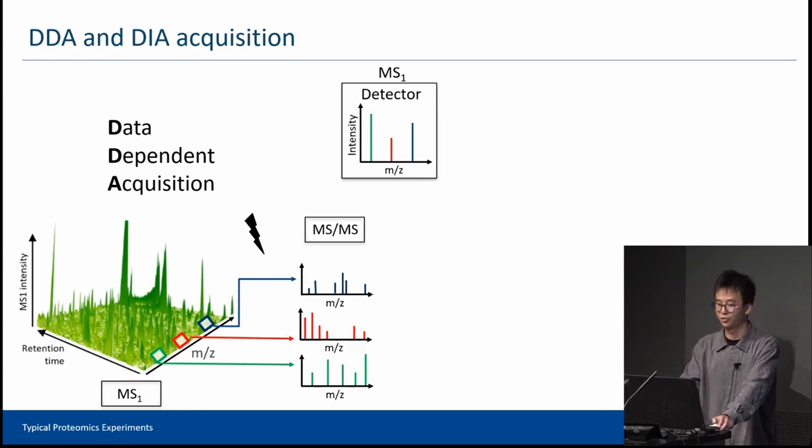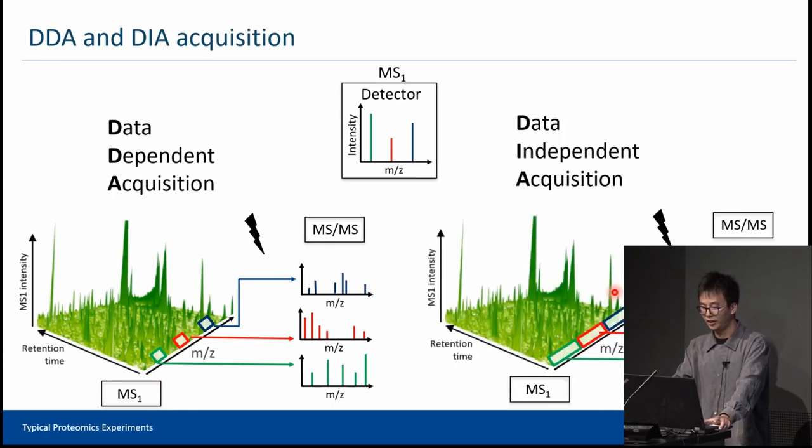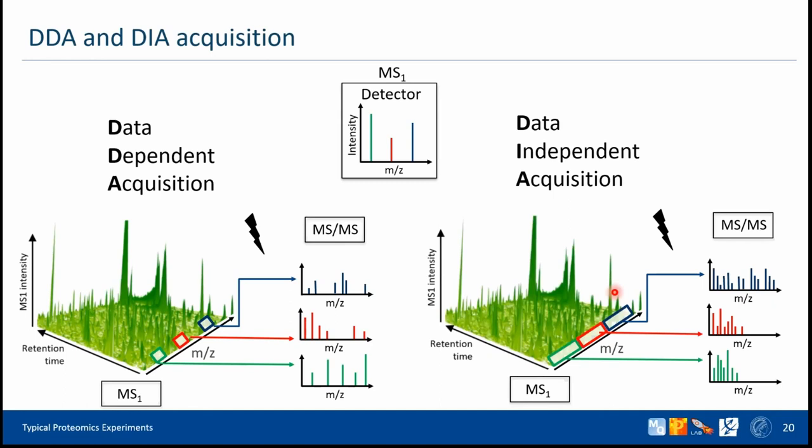However, some people might not agree that low-intensity peaks are not important. They instead collect all the information from the MS1 spectrum. We call this Data Independent Acquisition, DIA. No matter how intense your peak is, they take all the peaks and use very wide windows to capture all peaks from the MS1 spectrum. No pain, no gain. You capture all the information, but at the same time, the raw data is relatively bigger than DDA acquisition and more complex to analyze.